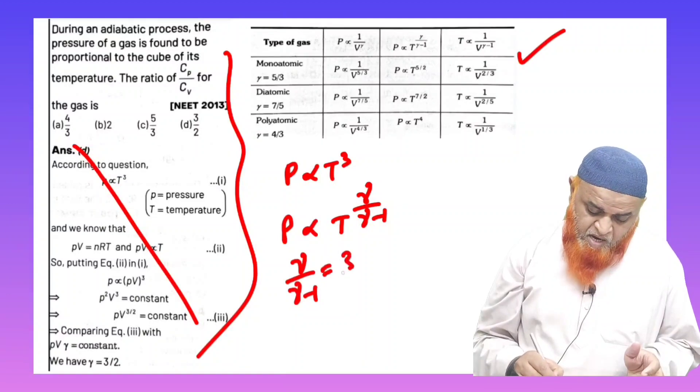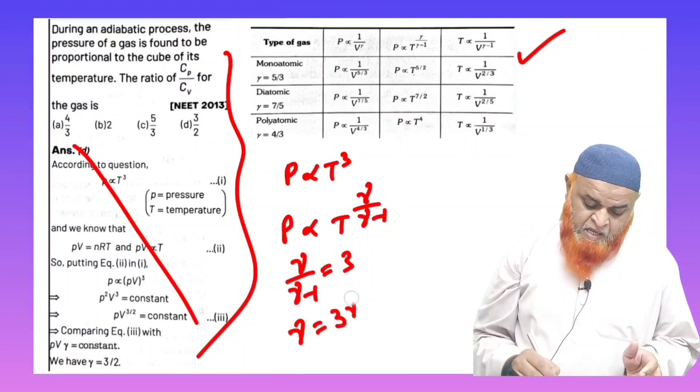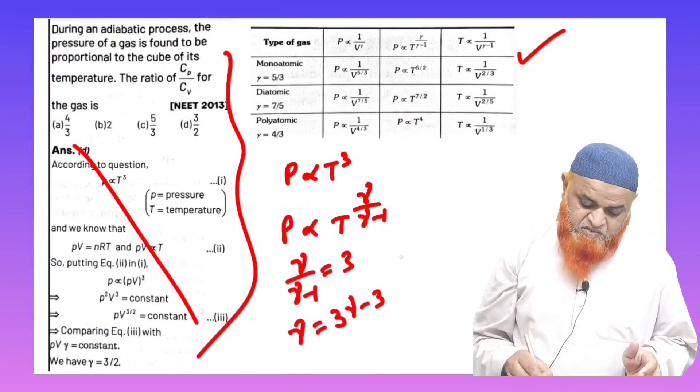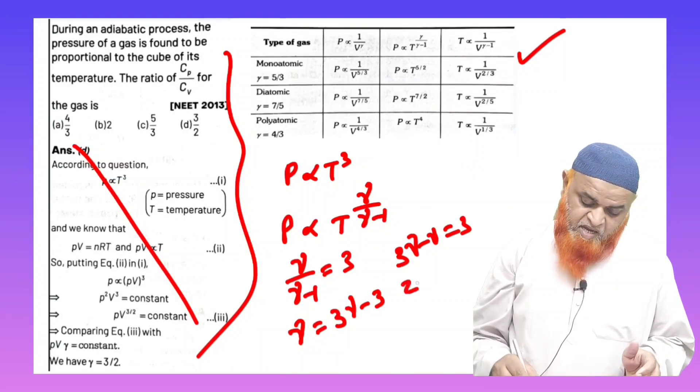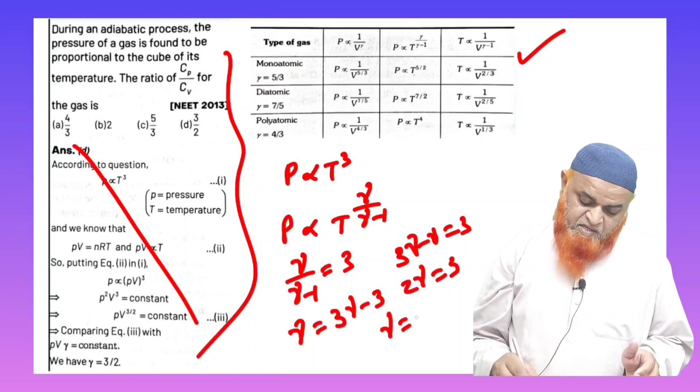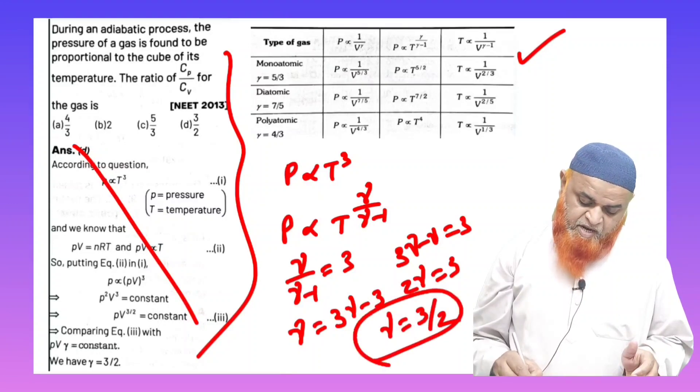So here, gamma by gamma minus 1 is equal to 3. So gamma is equal to 3 gamma minus 3. So here, 3 gamma minus gamma is equal to 3. So 2 gamma is equal to 3. Gamma is equal to 3 by 2. That's it.